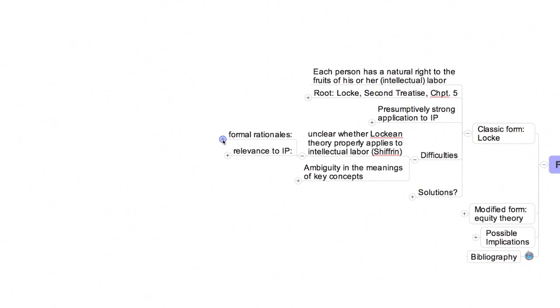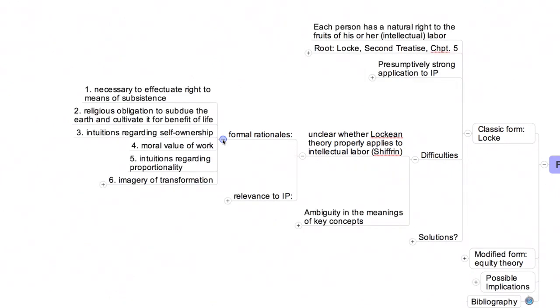Those six rationales are summarized in the map in front of you. First, natural reason, Locke argued, informs us that people have, quote, a right to their preservation, end quote, and the only practical way of effectuating that right is by appropriating, in other words, owning, the materials we need for food and shelter.